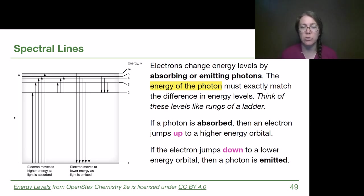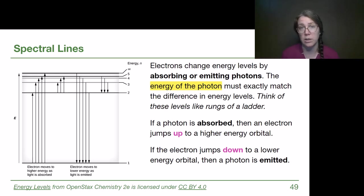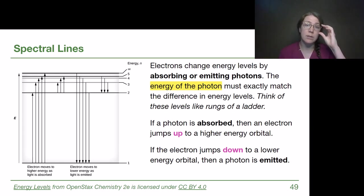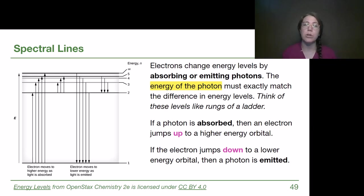Look at those two key cause-and-effect relationships: if a photon is absorbed, the electron can jump up to a higher energy level — the photon has to be coming from an outside source. But if the electron jumps down to a lower energy level, then a photon is emitted — that is not coming from an outside source. We can naturally and spontaneously go back down to lower energy levels and then send off light. But in order to bring electrons up to high energy levels, we have to provide outside energy.